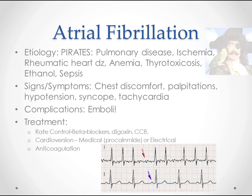Patients with AFib may present in two ways. Some have it incidentally found on an EKG with vague symptoms or during screening. Others present with chest discomfort, palpitations, hypotension, syncope, or tachycardia. When you run an EKG you'll see a characteristic wiggly baseline with no discernible P waves and an irregularly irregular rhythm, which is pretty much diagnostic for AFib.